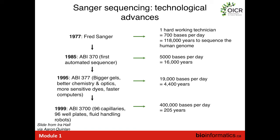The first automated sequencer was the ABI 370, which could sequence around 5,000 bases per day — about a five- to six-fold increase in throughput. That would drop the time to sequence a human genome to about 16,000 years. Still not very practical.